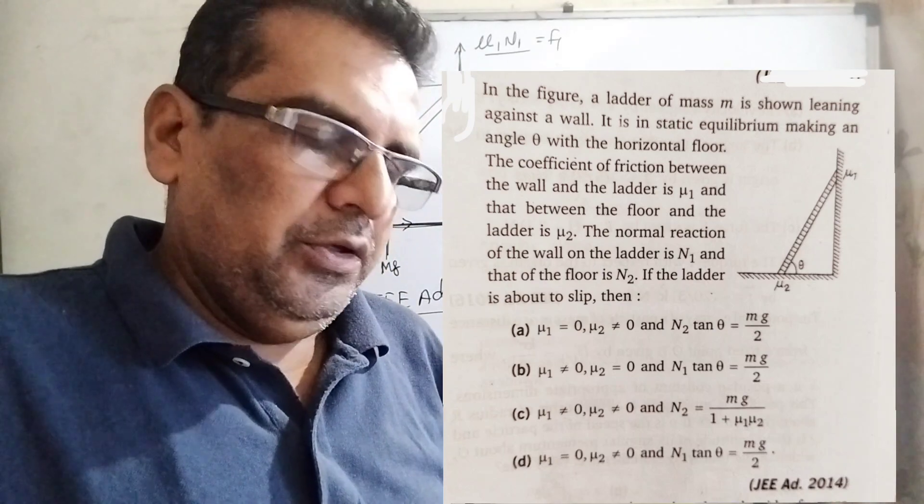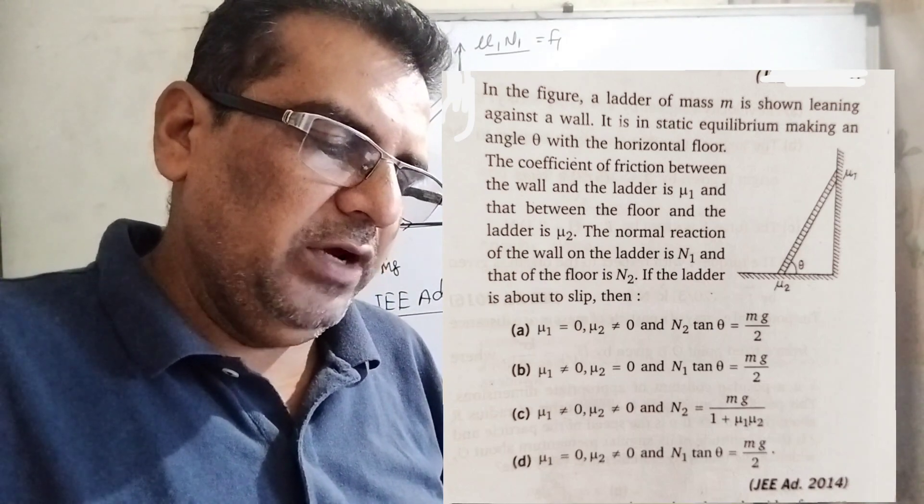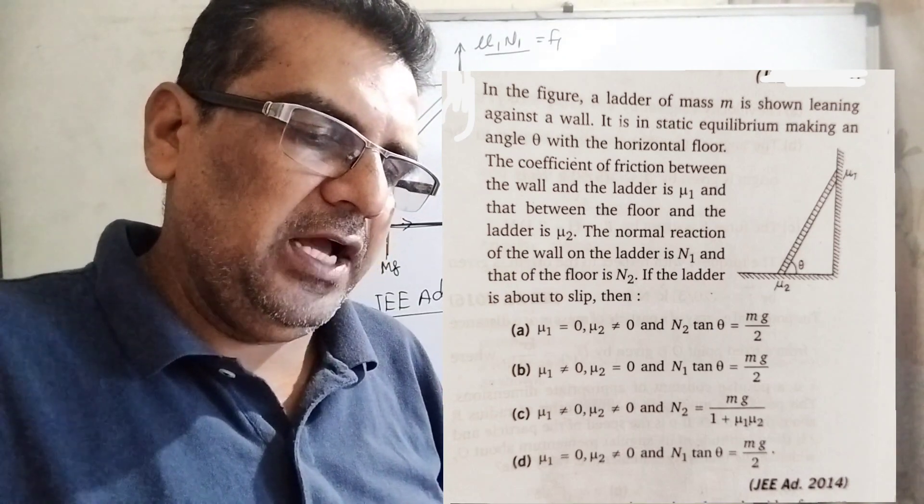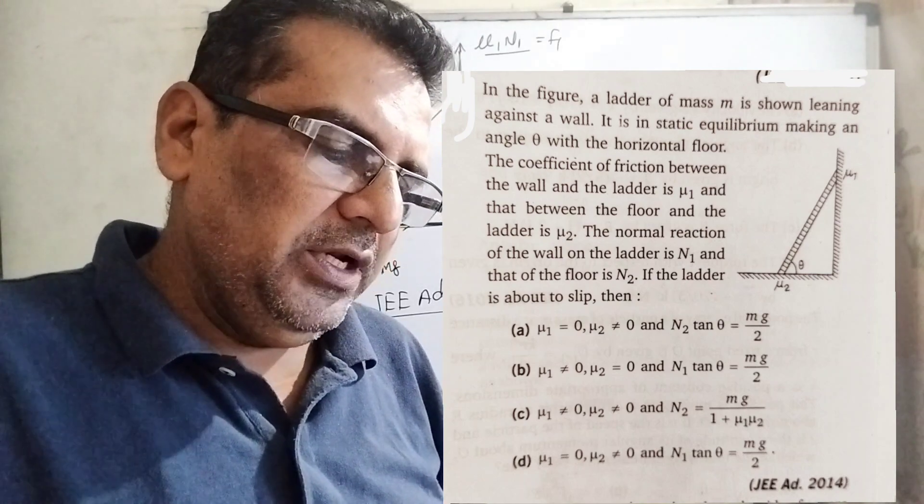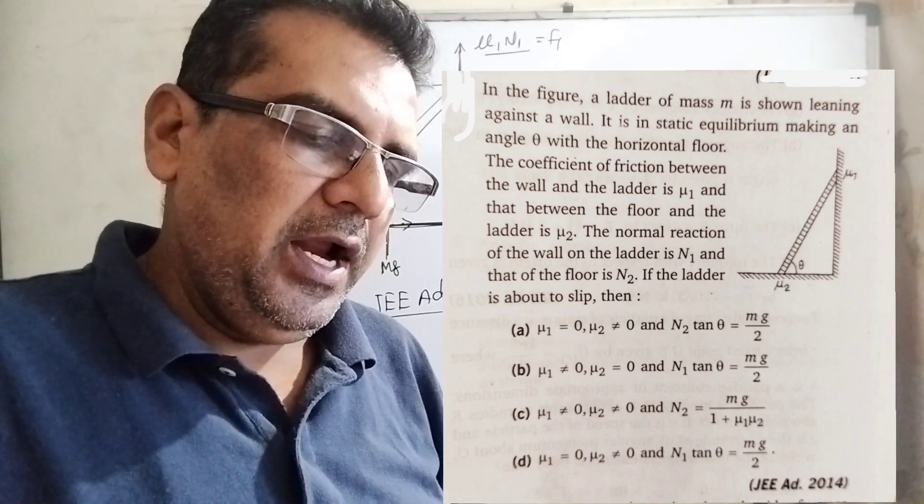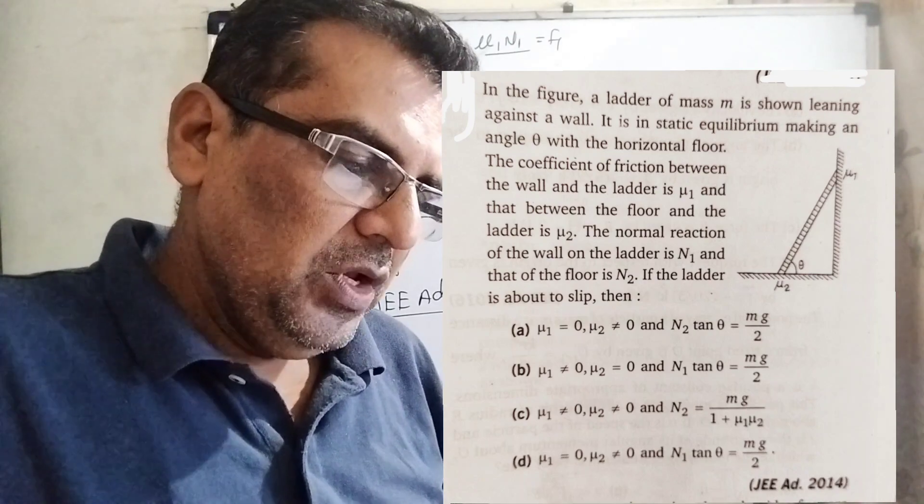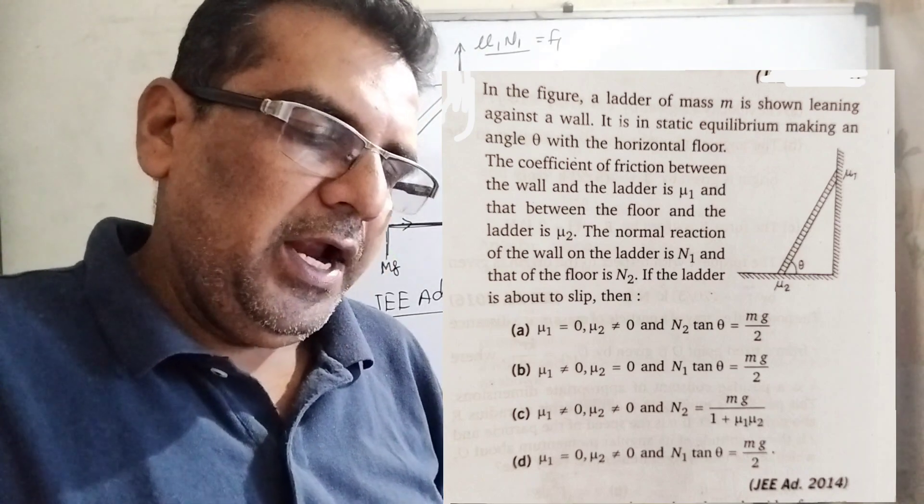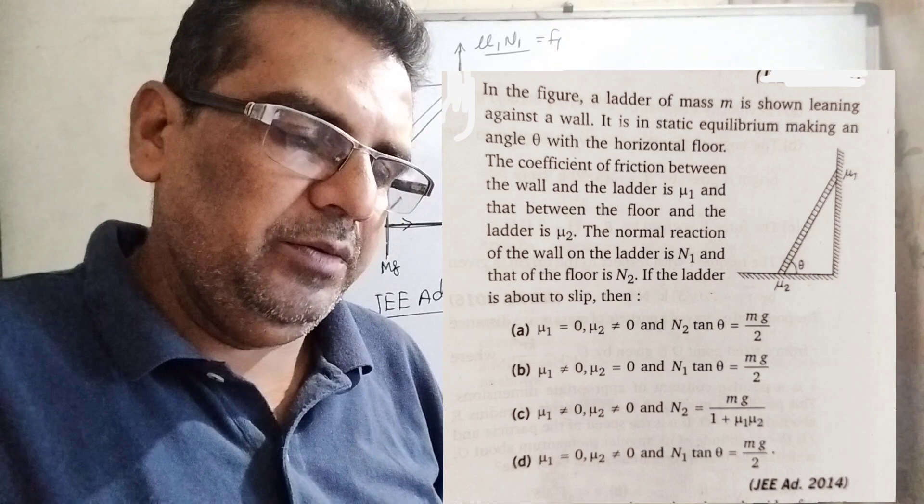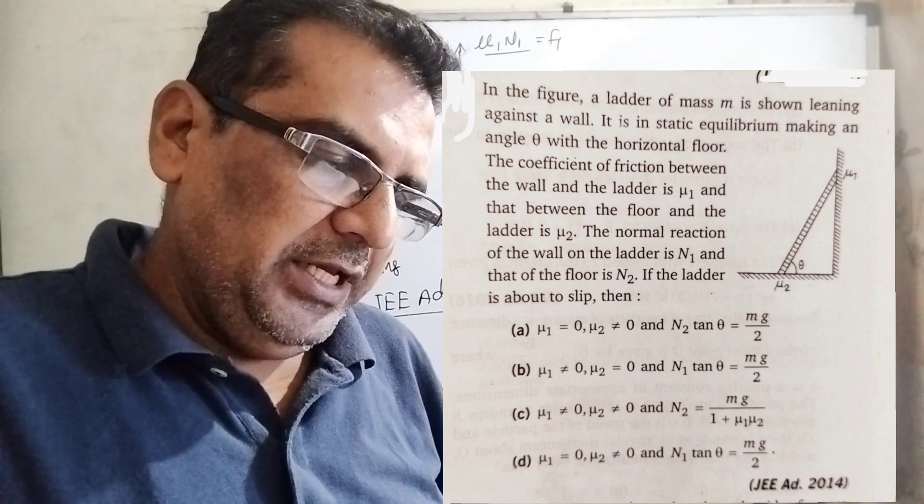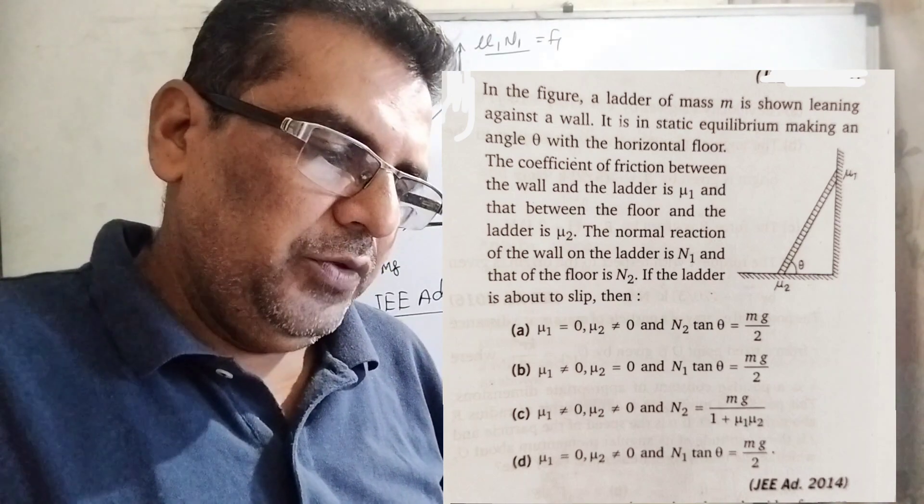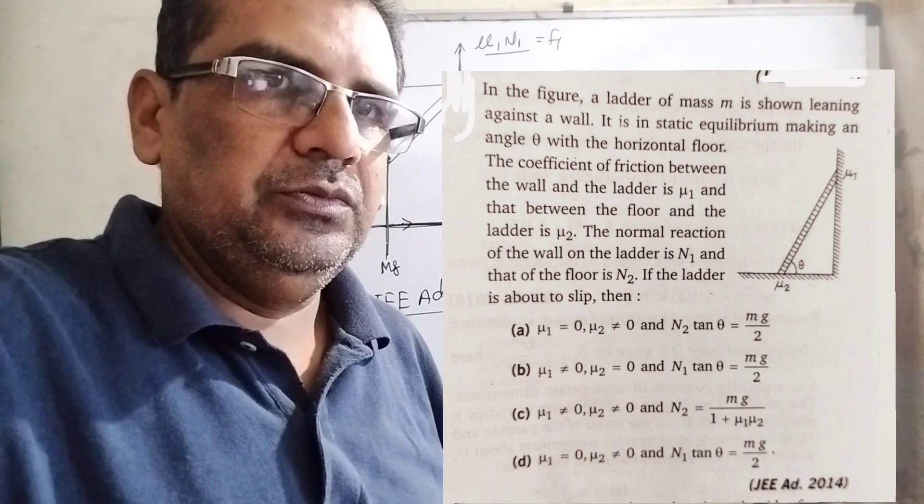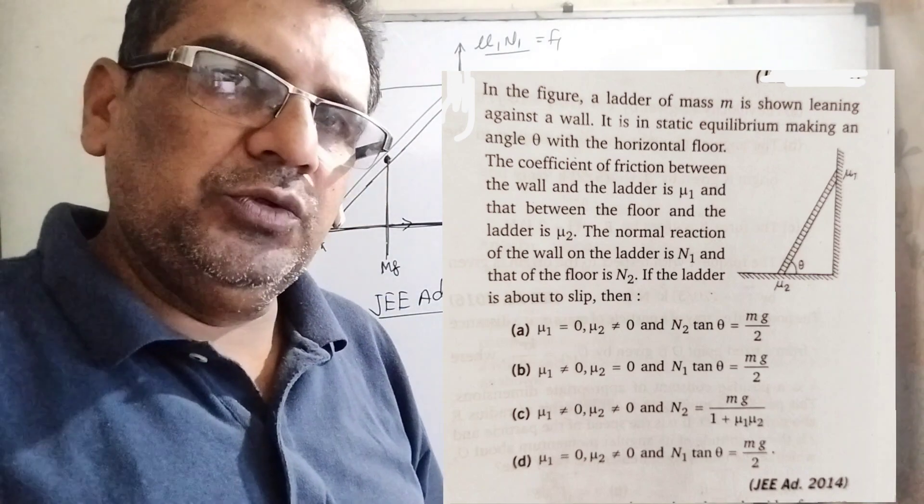Option A: mu1 equals 0, mu2 not equal to 0, and N2 tan theta equals mg by 2. Option B: mu1 not equal to 0, mu2 not equal to 0, and N2 equals mg by 1 plus mu1 mu2. Option C: mu1 not equal to 0, mu2 not equal to 0, and N2 equals mg by 1 plus mu1 mu2. Option D: mu1 equals 0, mu2 not equal to 0, and N1 tan theta equals mg by 2. This question is asked in JEE Advanced 2014.